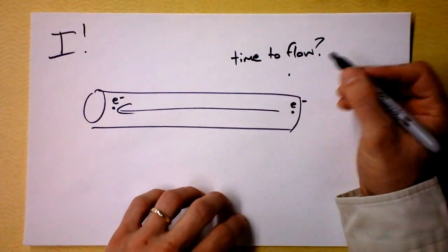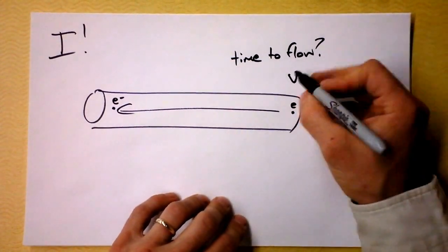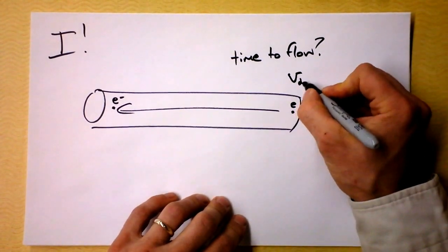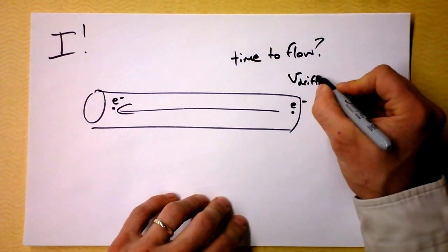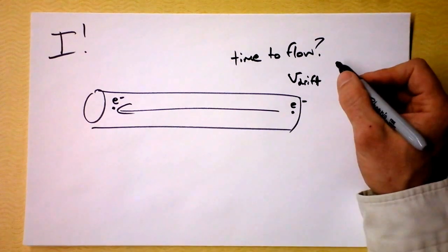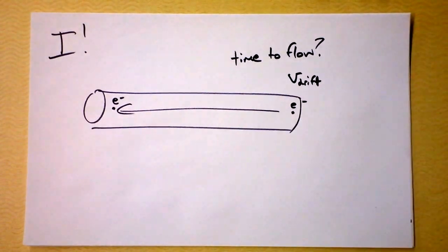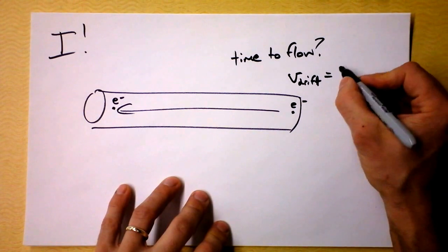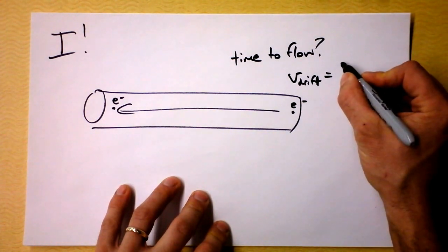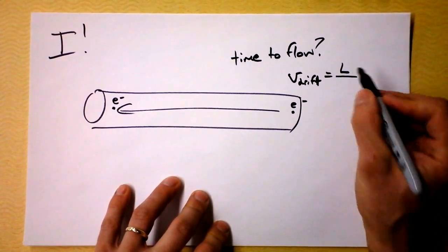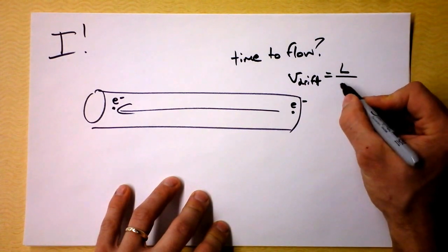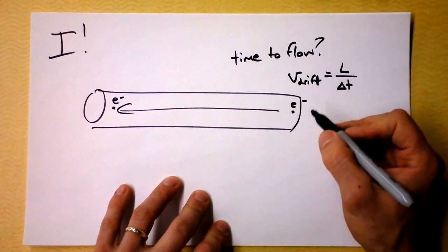How long will it take an electron to get from here to here? I guess that time, well, you know, we've defined the idea of an electron's velocity. It's probably drift velocity. It's going to be the drift velocity of the electron. But anyway, let's just say that velocity is the distance that it has to go, which I'm going to call the length of this wire, divided by the time that it takes to get from one place to another.